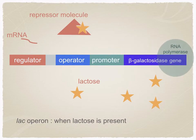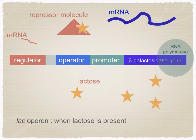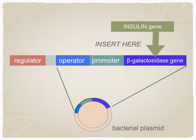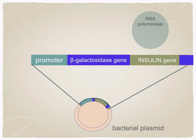How can we use this in insulin production? When looking at where to insert your human insulin gene, you need to make sure that you insert it alongside a promoter so that RNA polymerase will transcribe your gene. We've already discussed the promoter for the beta-galactosidase gene. You're going to insert your insulin gene either next to or in between the beta-galactosidase gene. You can see your bacterial plasmid here with your insulin gene inserted between the beta-galactosidase gene.